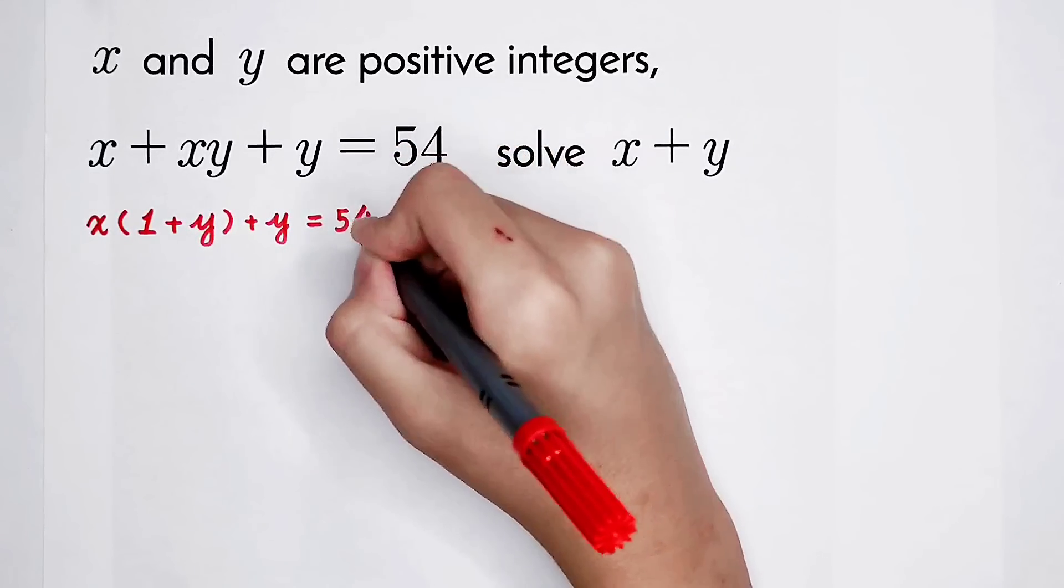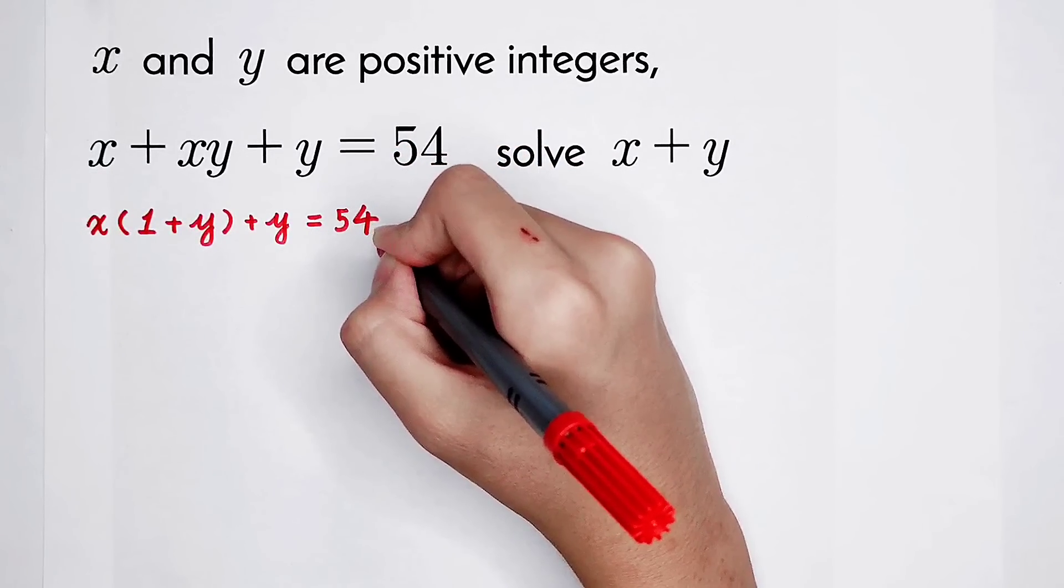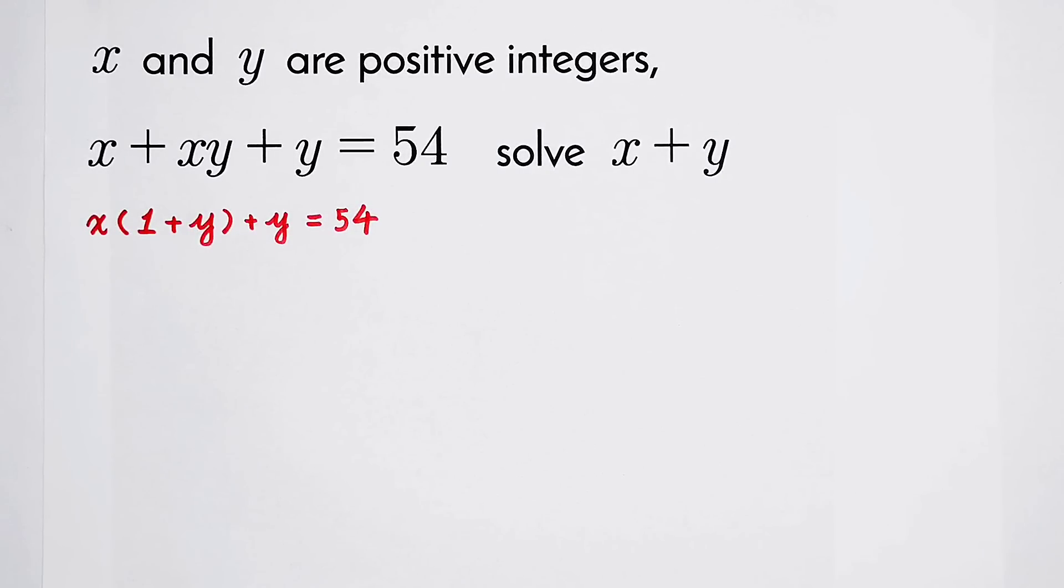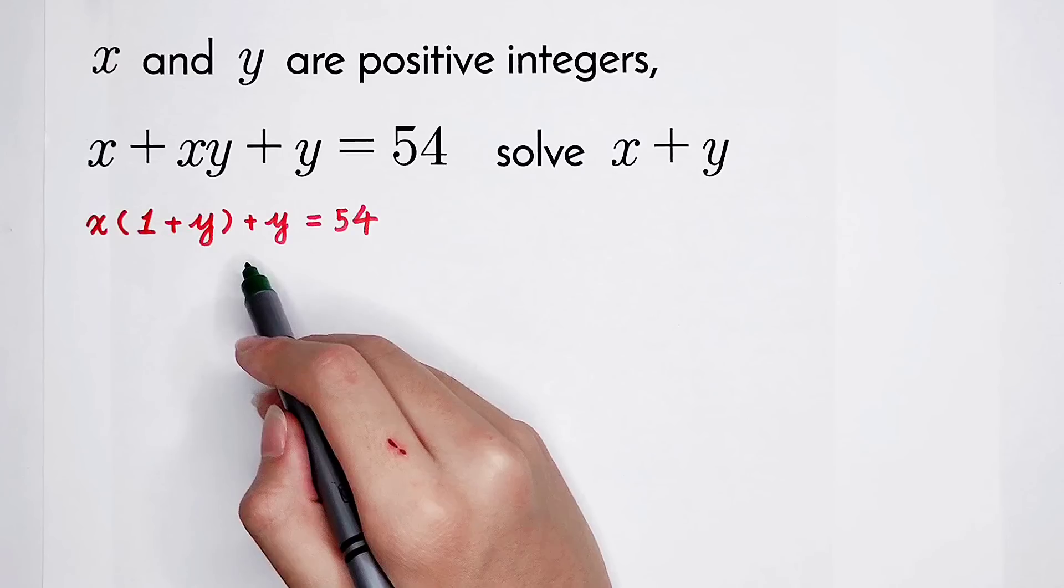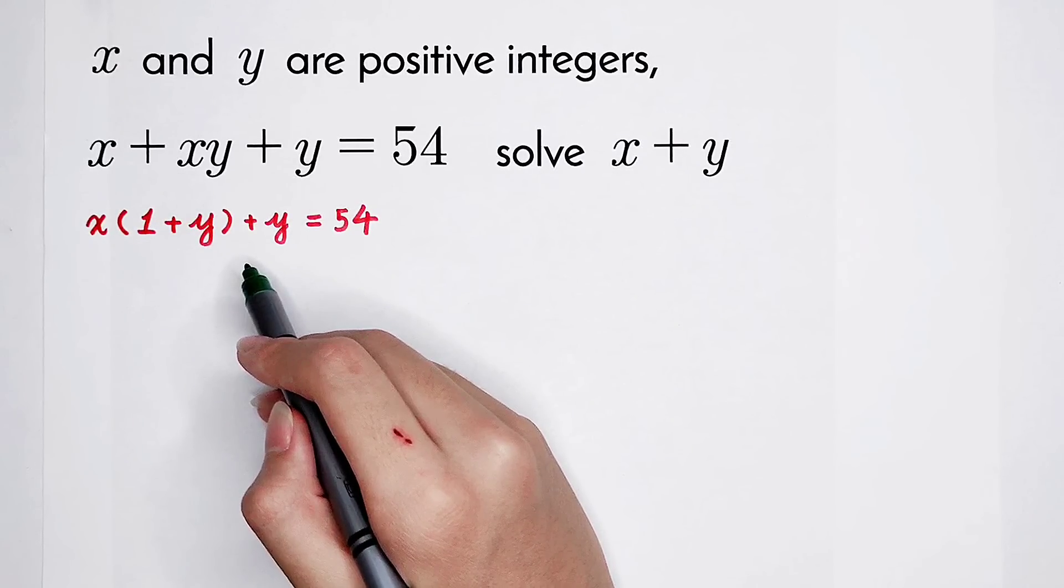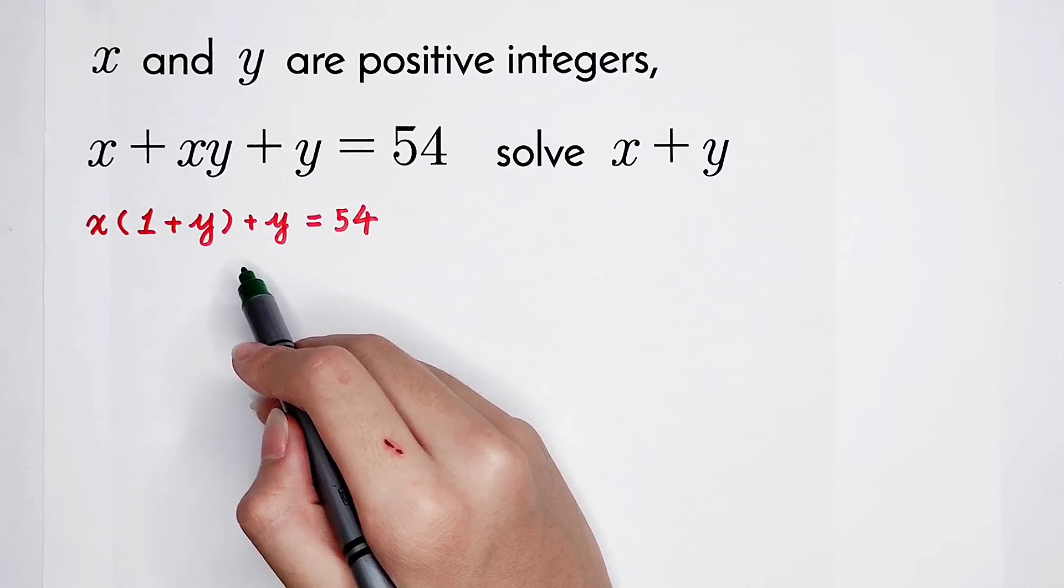And the right hand side is just an integer, 54. It's not a good looking number, is it? Because I want to factor the left hand side, definitely. But I think we cannot. But we can try.